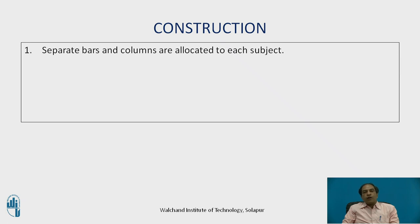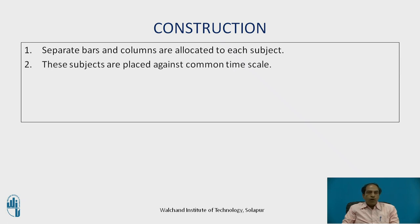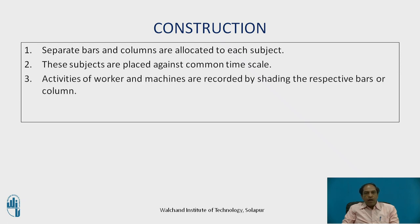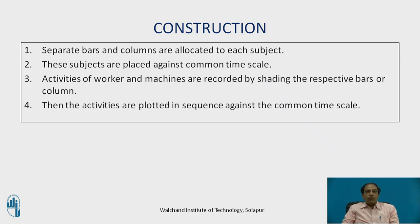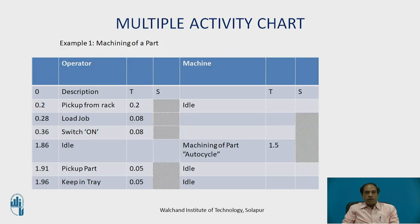To construct a multiple activity chart: separate bars and columns are allocated for each subject, placed against a common time scale. Activities of workers and machines are recorded by shading the respective bars or columns — shading indicates occupancy or utilization, while blank spaces indicate idleness. Activities are then plotted in sequence against a common time scale.